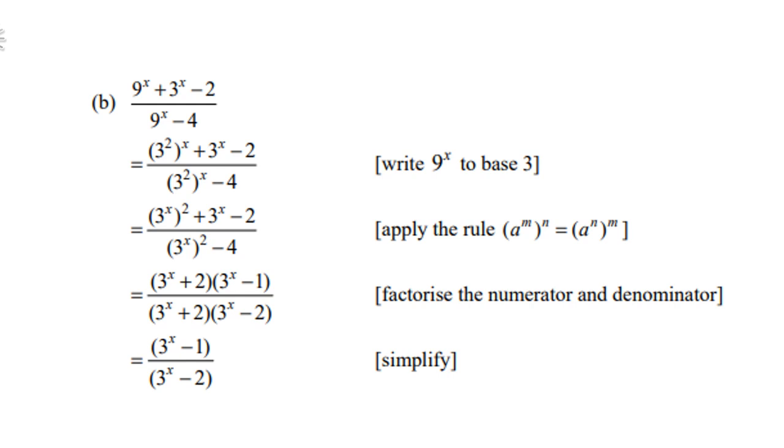As you could be, 9 to the power x plus 3 to the power x minus 2 over 9 to the power x minus 4. And again, I know it's very tempting to cancel 9 to the power x, but please don't.